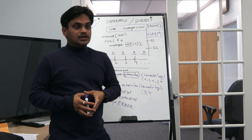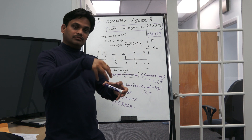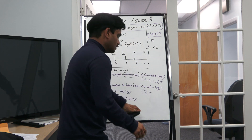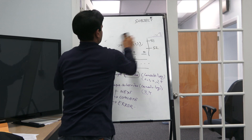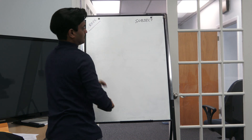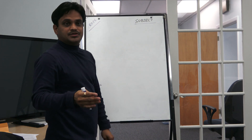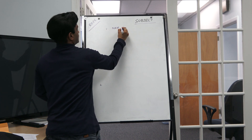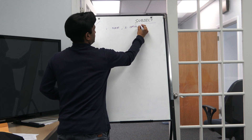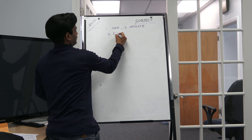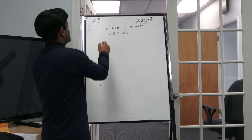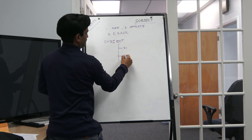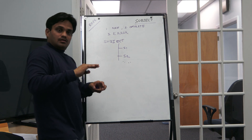Now we'll try to understand the different types of subjects available and do a little deep dive into Subject to understand how we can leverage it. Subject has three methods: the first is next, the second is complete, and the third is error. Subject also has a list of subscribers internally.